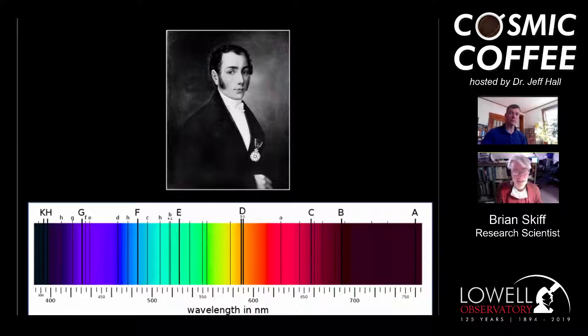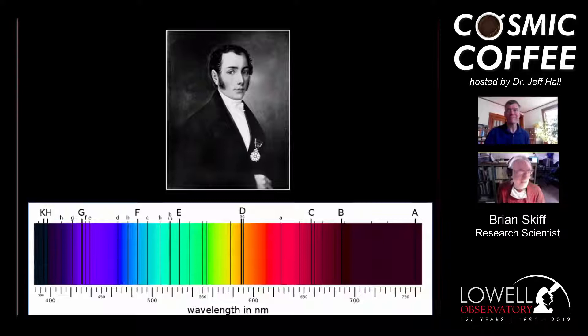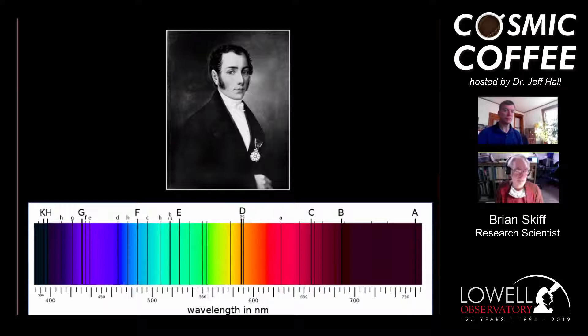This is how things were for about 40 years until the mid-1850s, when Kirchhoff and Bunsen — Robert Bunsen of Bunsen burner fame — and Gustav Kirchhoff, who were laboratory chemists, showed that all these lines were from different elements. That electrified people, who recognized: we can actually see that there are real chemical composition differences amongst the stars. We can actually tell what the stars are made of.